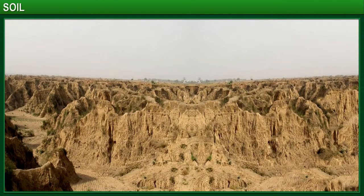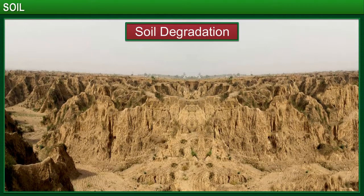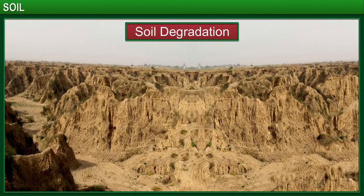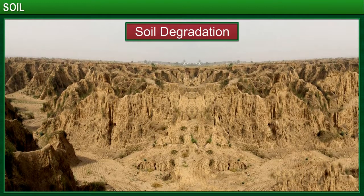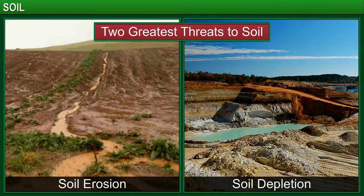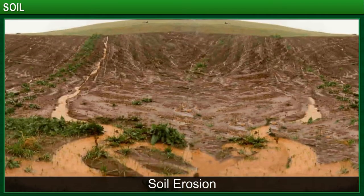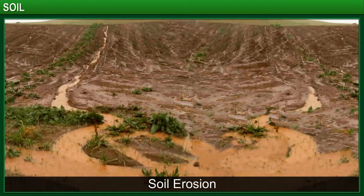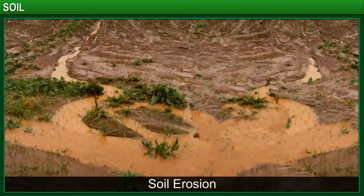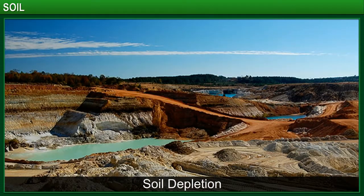Like land degradation, soil degradation is also an area of concern. This degradation is caused by activities of human beings as well as some natural activities. The two greatest threats to soil come from soil erosion and depletion. Soil erosion occurs when soil and rock particles are carried away by wind, water or ice and deposited in another location. Soil depletion takes place when the nutrients in soil are removed and are not replaced, affecting the quality and fertility of the soil.